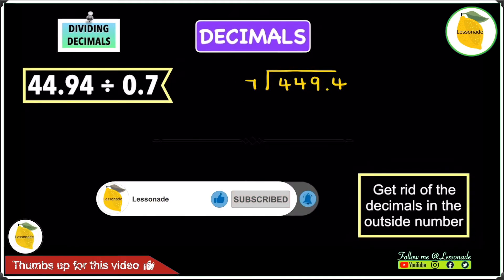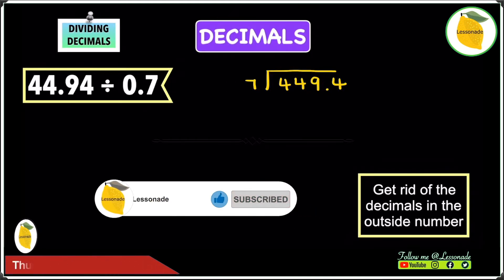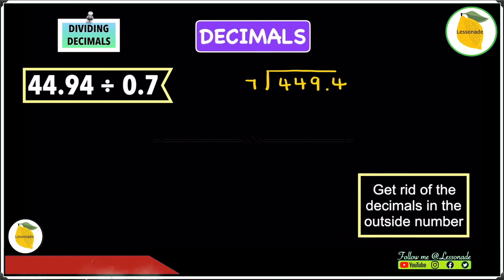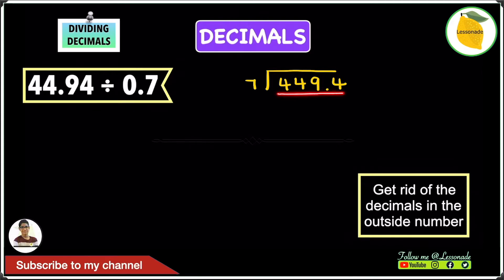After moving the decimal point one space towards the right, we now have 7 as the outside number and 449.4 on the inside. So let's start by dividing these numbers.